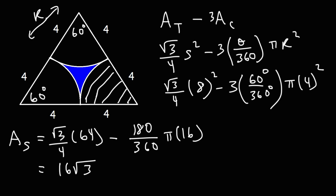180 divided by 360, we could cancel a 0, so it becomes 18 over 36. Now 18 over 36 we can reduce that. 36 is 18 times 2 and 18 is 18 times 1, so it becomes 1 half. So we have 1 half pi times 16. And half of 16 is 8.